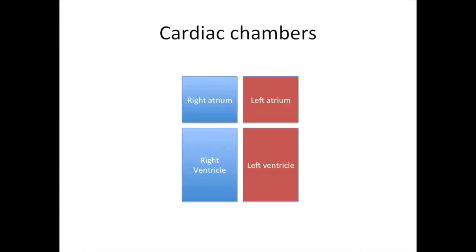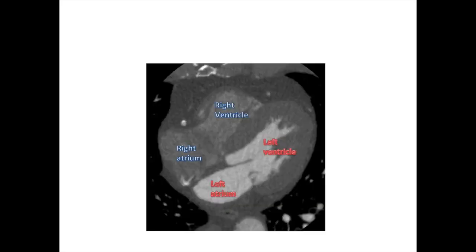So what are the cardiac chambers? Well, there are four of them. There are two at the top, which are the atria, and two at the bottom, which are the ventricles. In this diagrammatic form, we've got a right side and a left side, as the classical anatomists liked. However, when we put it into the human body, the heart is swung round so that we've got the right ventricle at the front. The two chambers at the top are the atria, and the two chambers at the bottom are the ventricles.